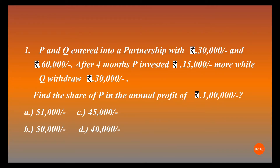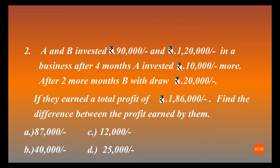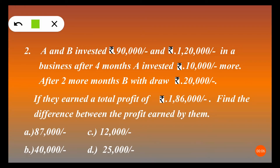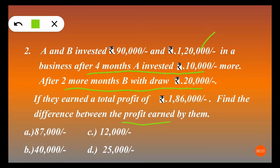I hope you understood the first question. Now let's move to the second one. A and B invested 90,000 rupees and 1 lakh 20,000 rupees in a business. After 4 months, A invested 10,000 rupees more, and after 2 more months B withdrew 20,000 rupees. If they earned a total profit of 1 lakh 86,000 rupees, find the difference between the profit earned by them.